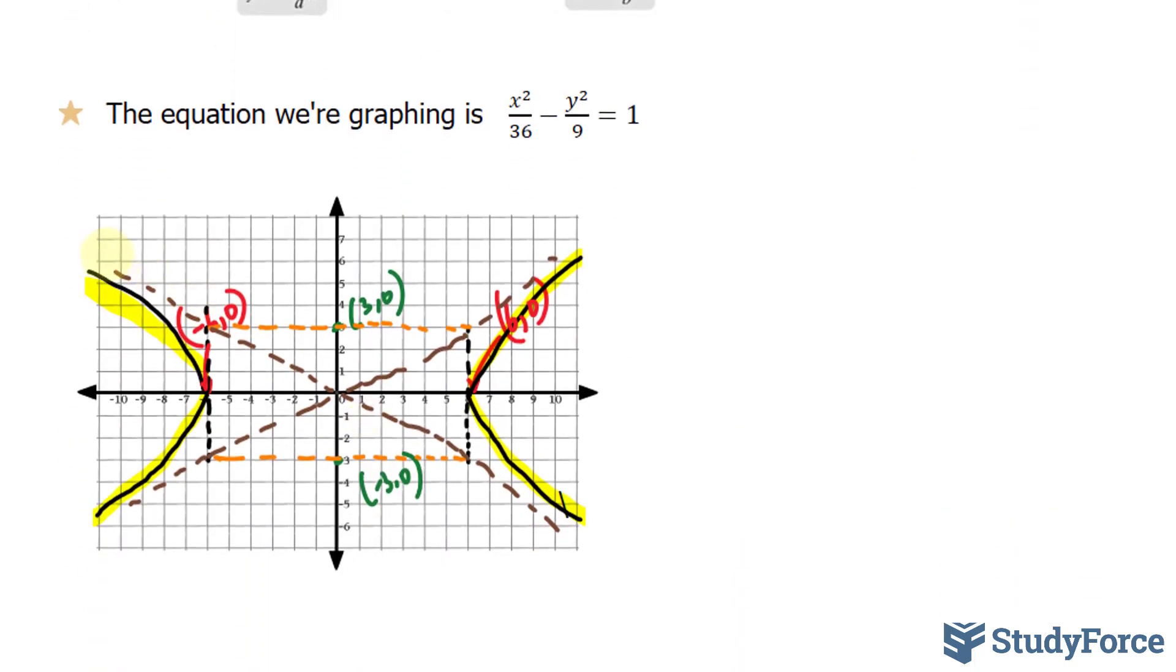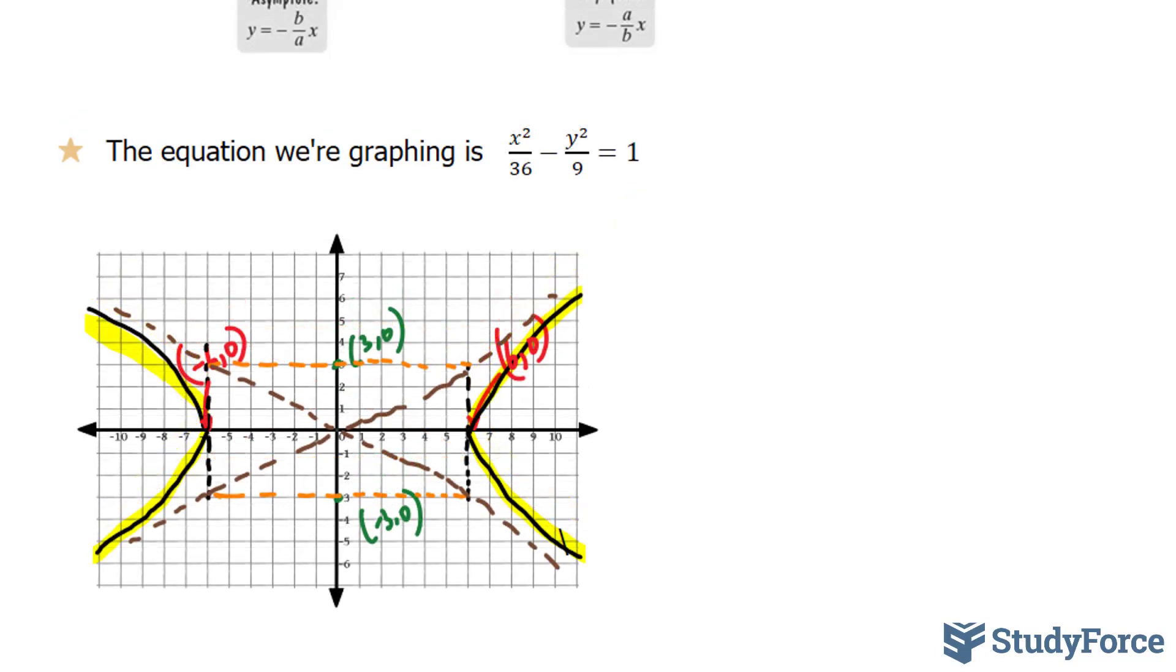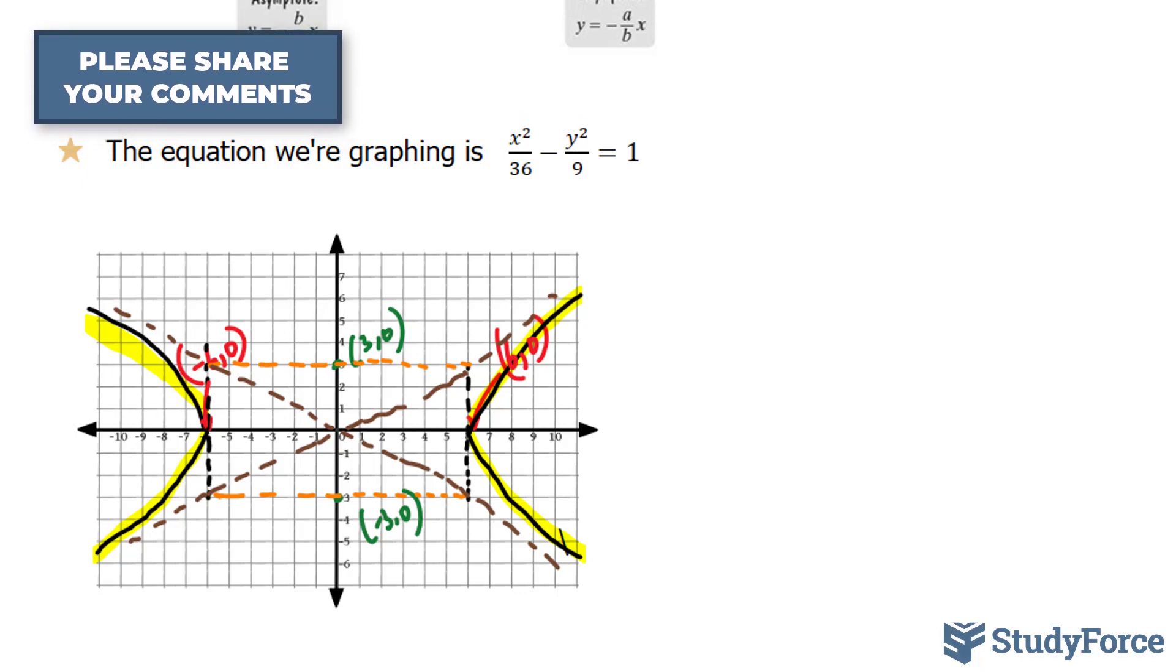So these brown lines represent plus minus 1 over 2 x. Now keep in mind that the question asks for one more thing. It asks for the foci, or the focus, of each of these curves. And the focus will be within this region for each.